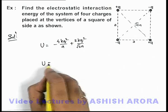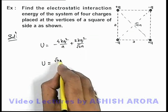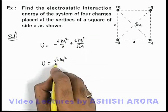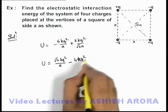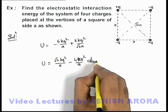So the final interaction energy here we can write as √2kq²/a minus 4kq²/a. That'll be the answer to this problem.